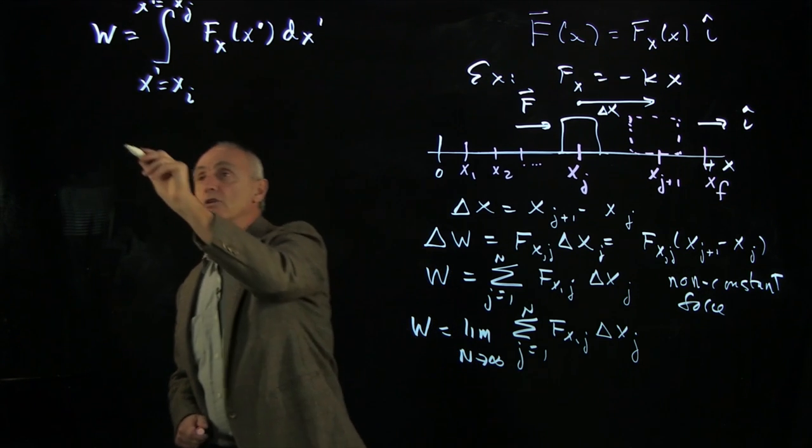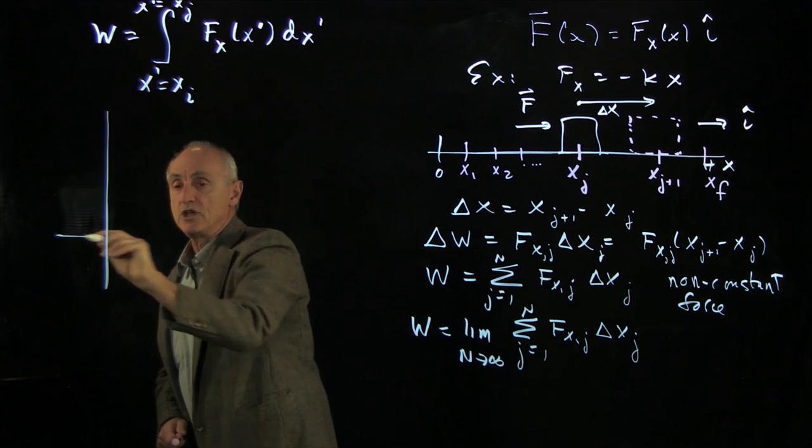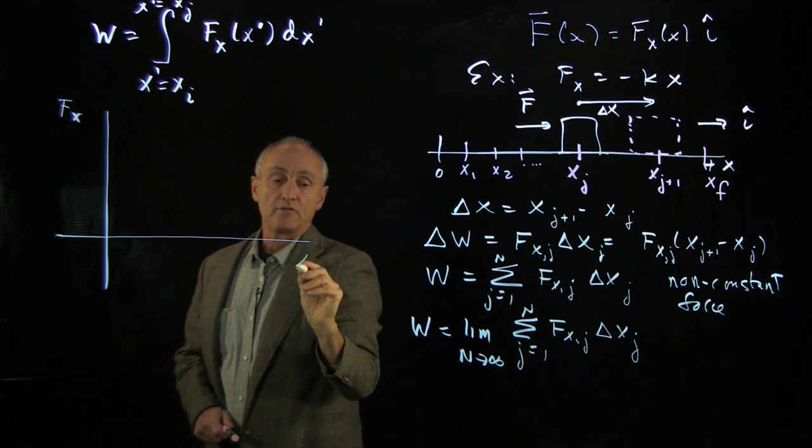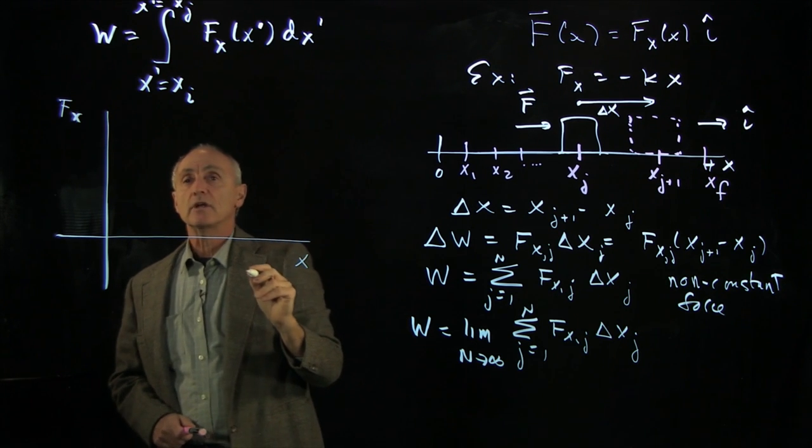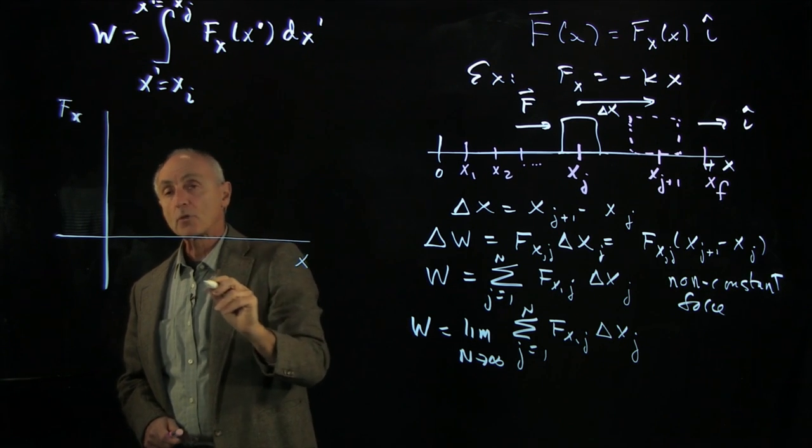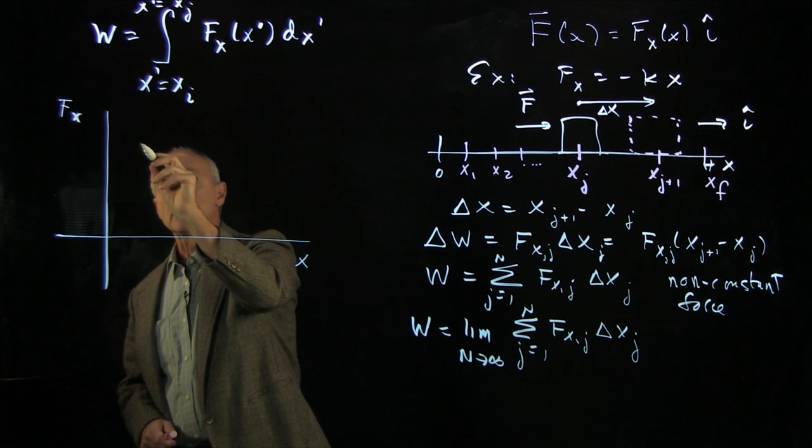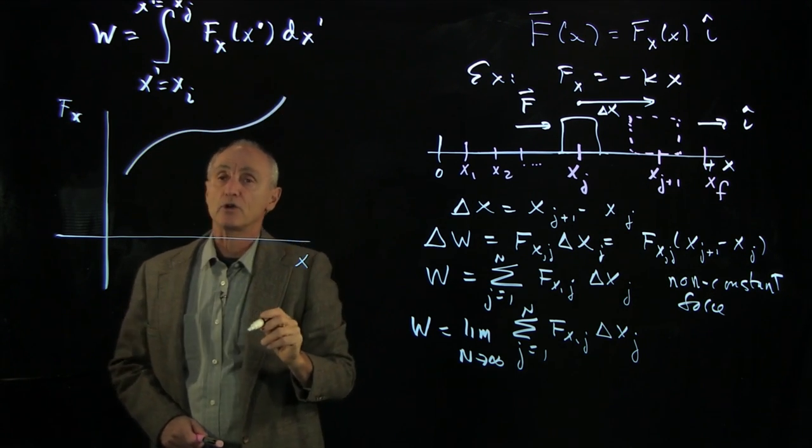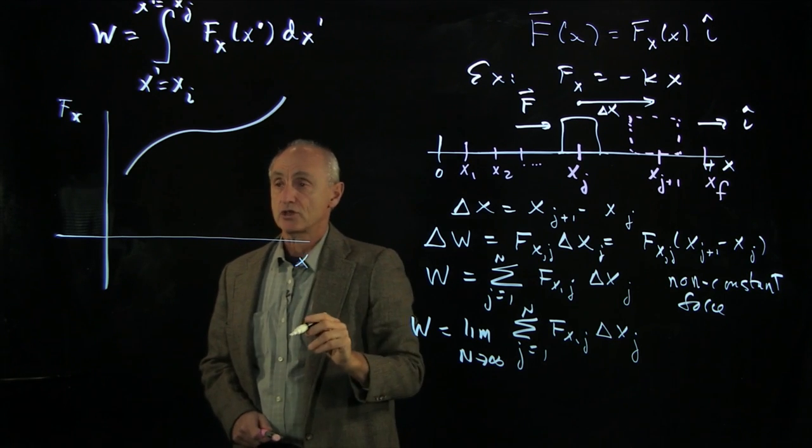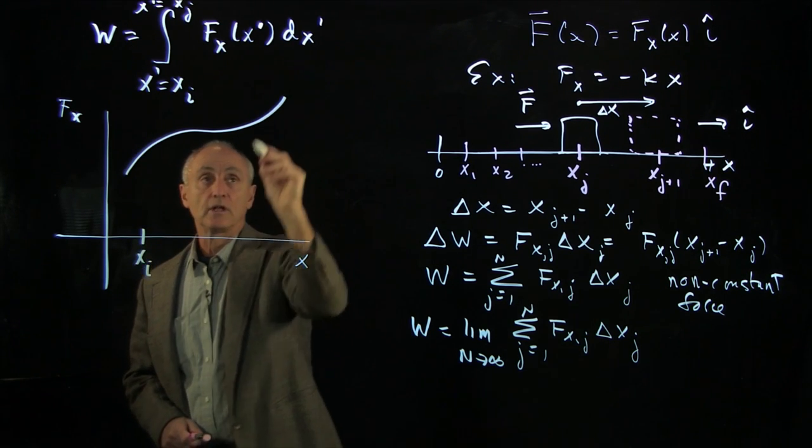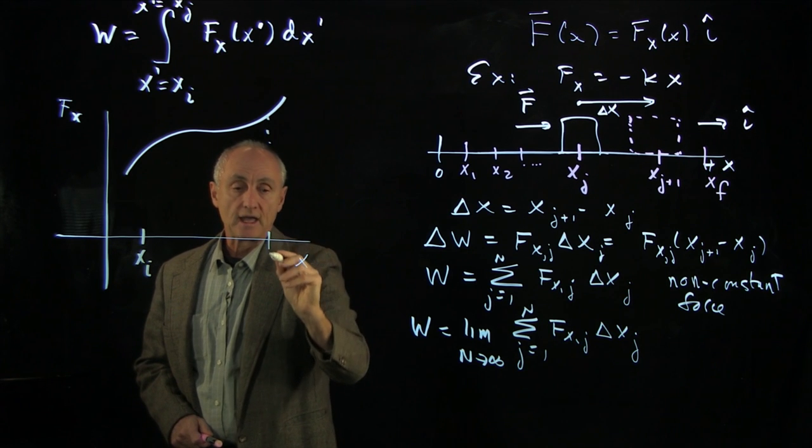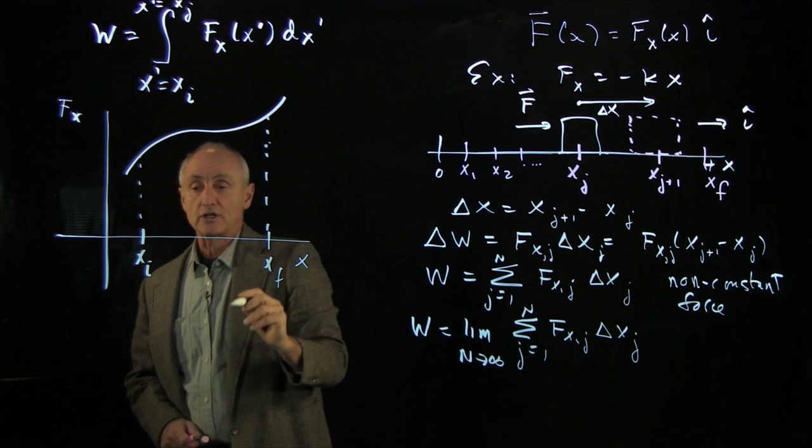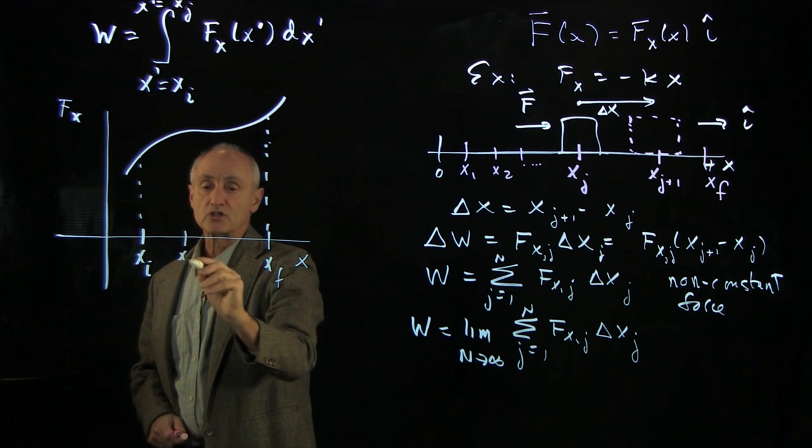Let's try to look at some type of geometric interpretation. If we plot F(x) versus x, and consider a case where we have some arbitrary force—I'm going to draw the force as if it were arbitrarily increasing as a function of x. Here's our x_initial and here's our x_final. We would like to make a geometric interpretation. Let's consider x_j.